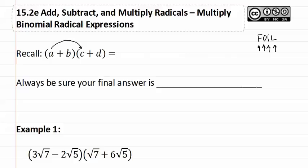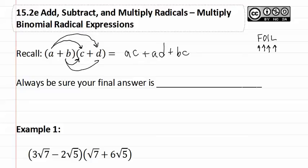So we would have a times c, or ac, then the outers, or a times d, so we'd have plus ad, the inners which give us plus bc, and then the lasts which would give us plus bd. Remember we must always make sure our final answer is simplified.